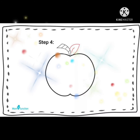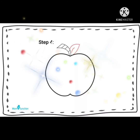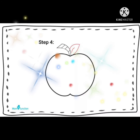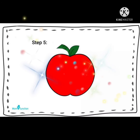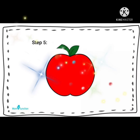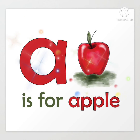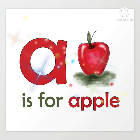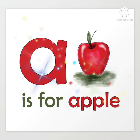Now draw a small stem like this. Don't forget to color it. Take a red color crayon and color it nicely. Wow, what is this children? Yes, this is an apple. A is for Apple.